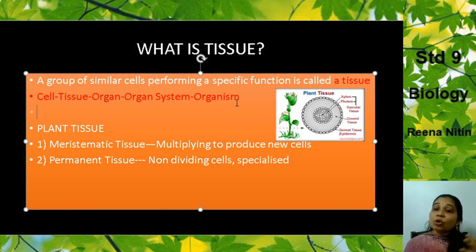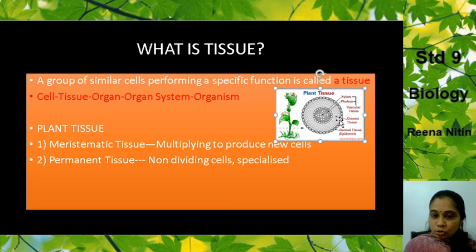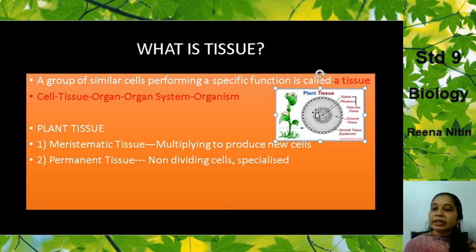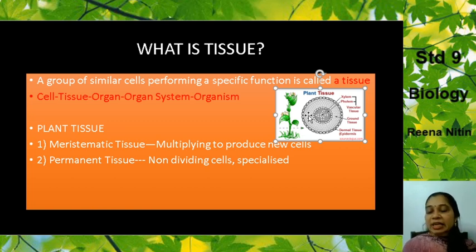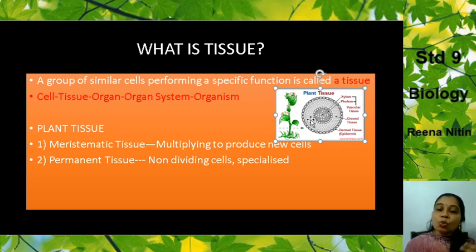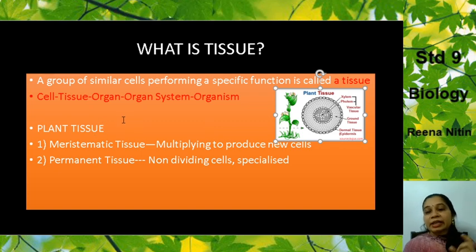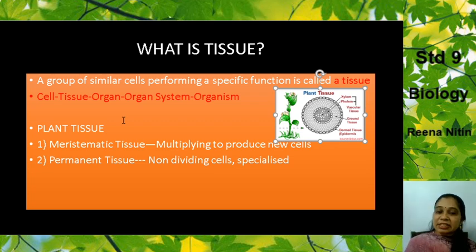Similarly, it also happens in the plant body. There are different cells. We are going to study the first part of this chapter — the plant tissues — and in the second part of the chapter we will start animal tissues. What are the main types of plant tissue? There are two main types: the meristematic tissue and the permanent tissue.